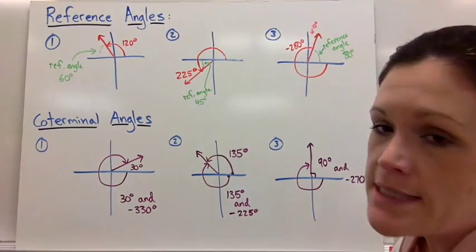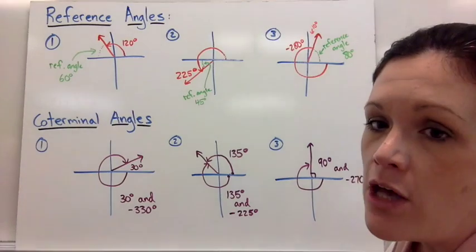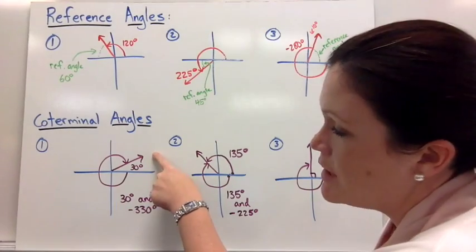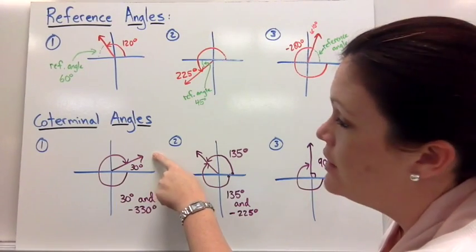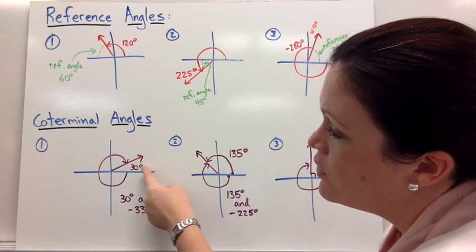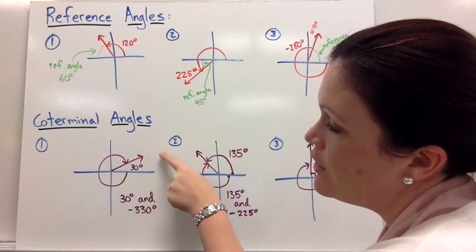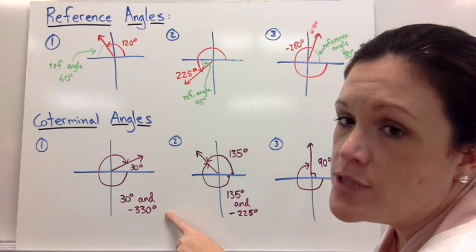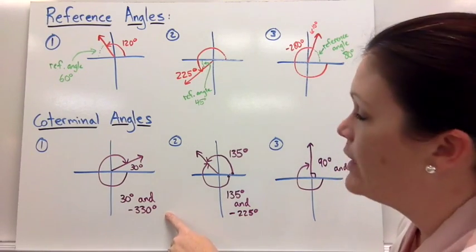And then I put a few more examples of coterminal angles to help you understand that a little better. A coterminal angle would be that they share the terminal side. For example, a 30 degree angle or a negative 330 degree angle share the same ray for their terminal side, so they're called coterminal angles.